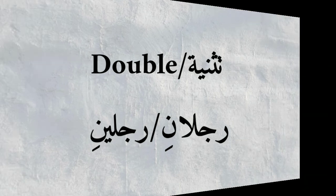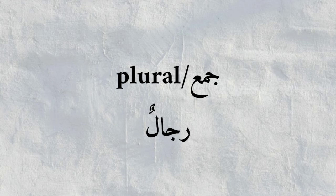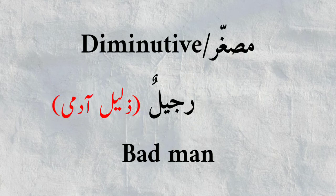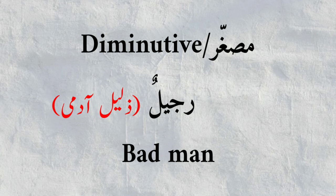Another sign is tasniya — the dual form — for example, rajulun becomes rajulani, so tasniya is a symbol of noun. Or if you see jama' — the plural — for example, rajulun becomes rijal, that is also a sign of noun. Next sign of noun is musaghar — the diminutive form — which is used to express smallness or insignificance, for example, rajulun becomes rujaylun. So the diminutive is a symbol of noun.